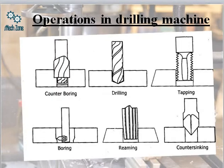The different operations performed on a drilling machine include: counter boring — the process of making the hole a little bit larger, done by end milling; drilling; tapping — an important process in drilling; boring — the enlargement of the hole; reaming — the process of finishing the already-drilled hole; and counter sinking — the process of making the hole slightly tapered at the beginning, using the tool shown in the diagram.